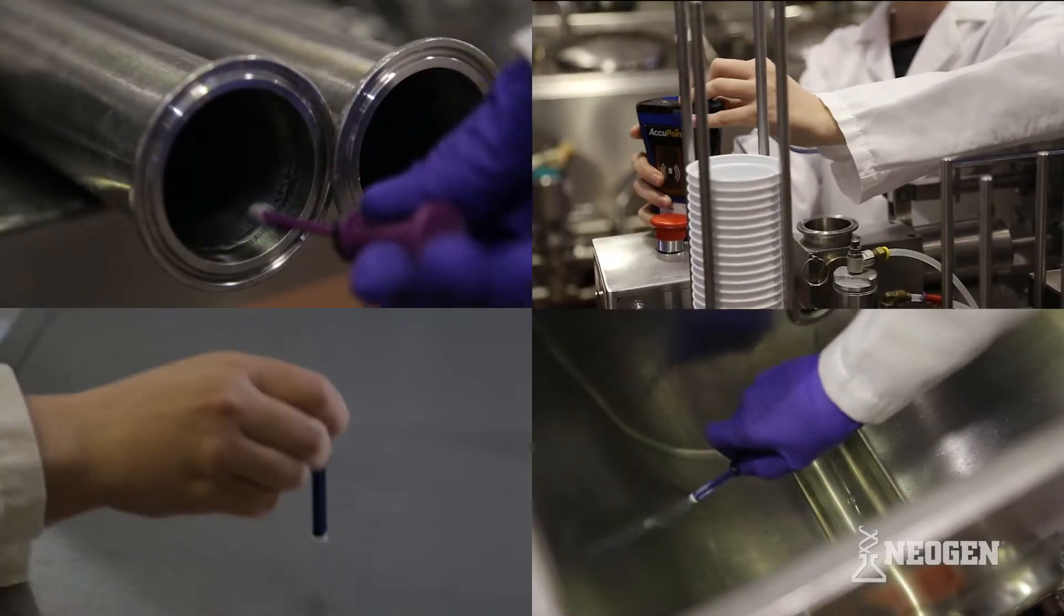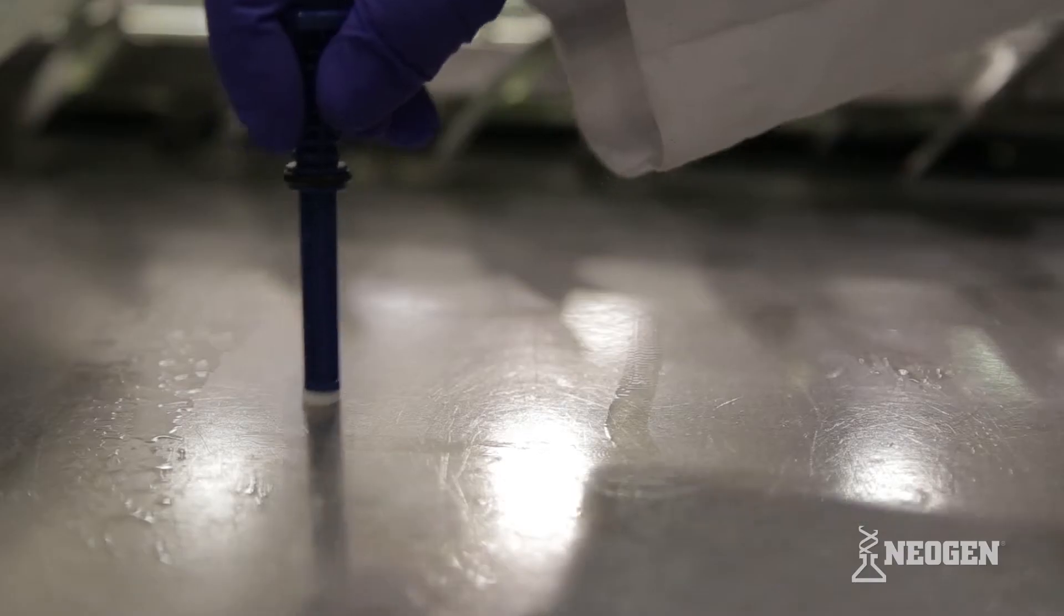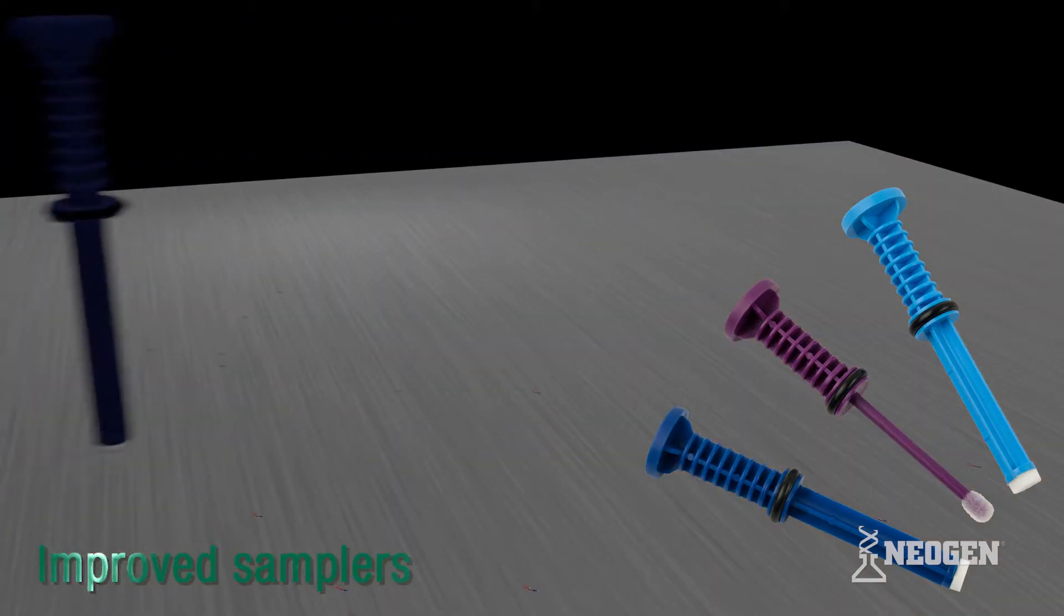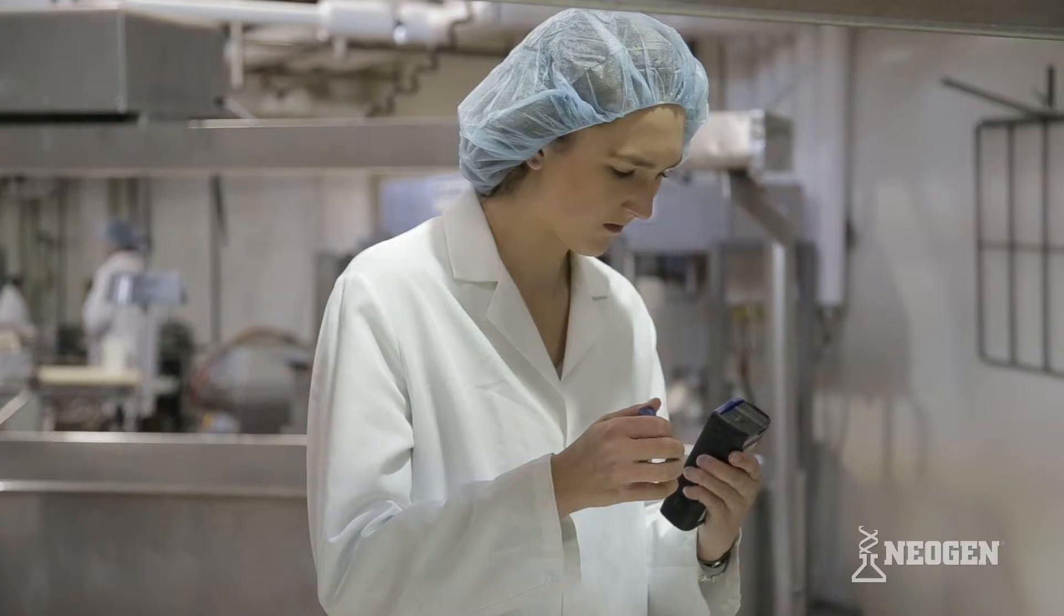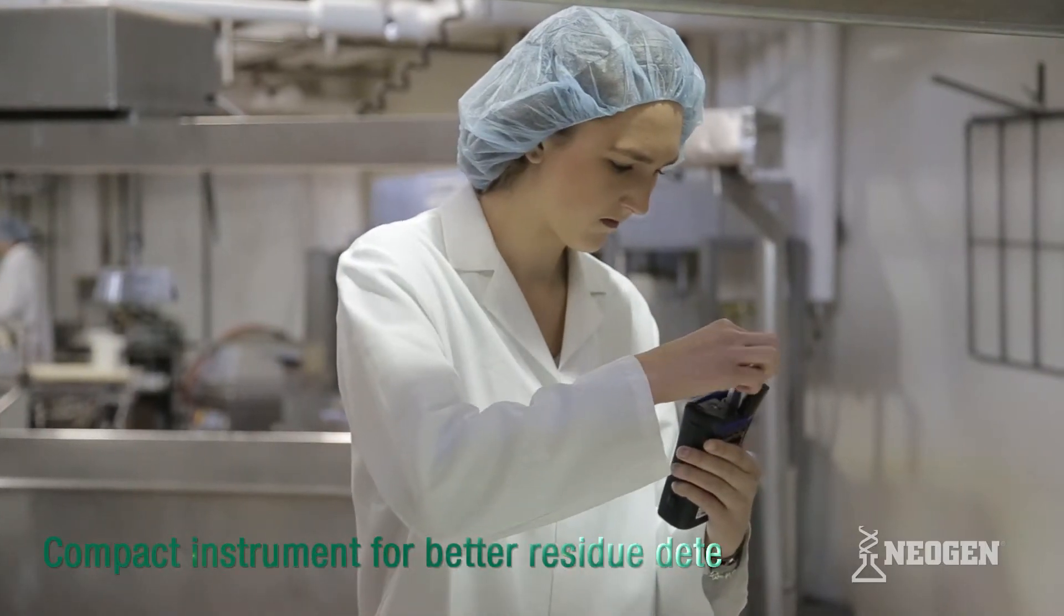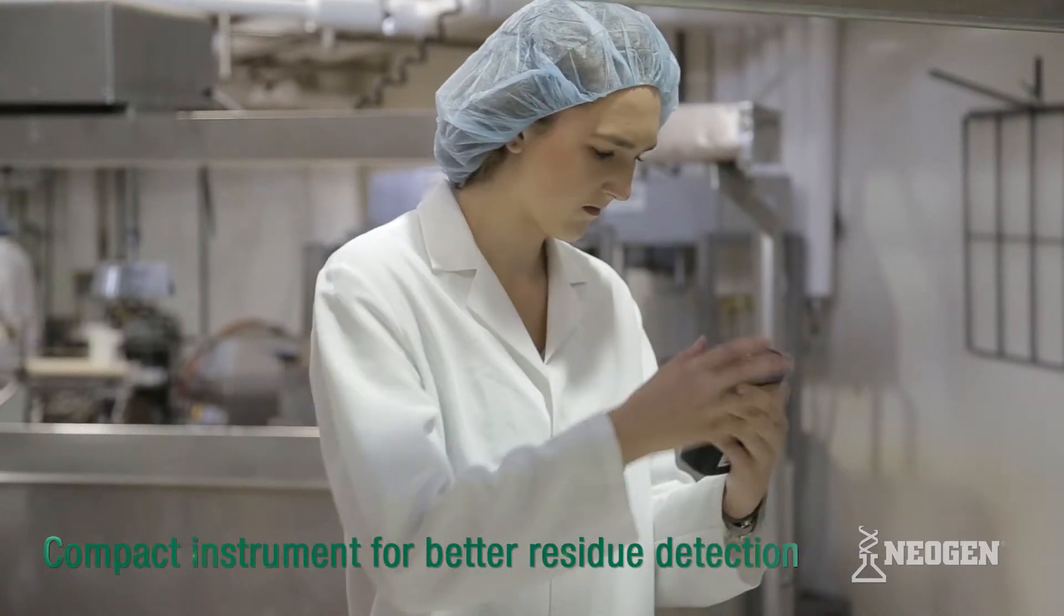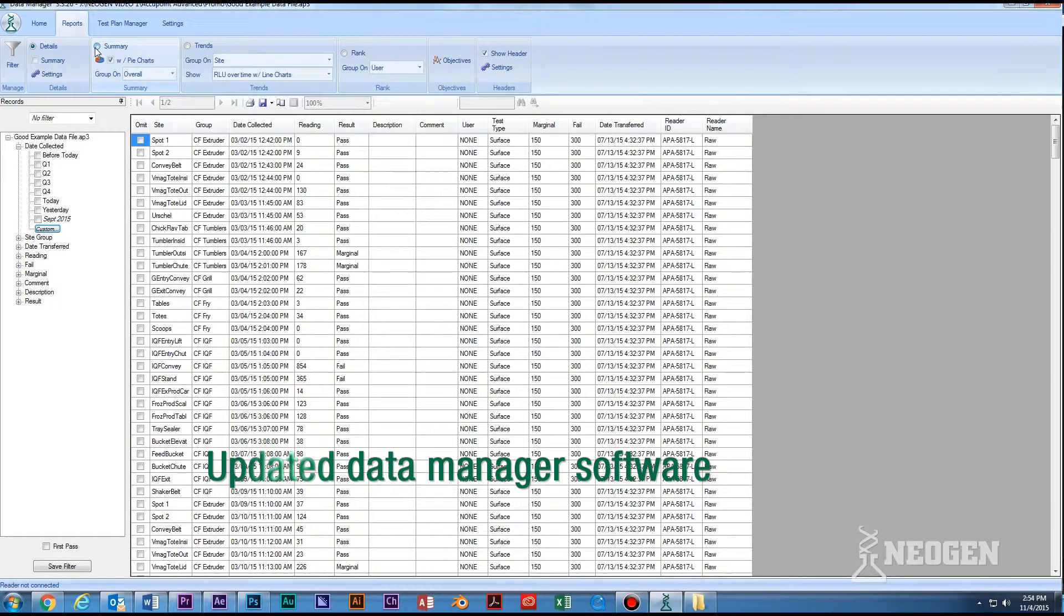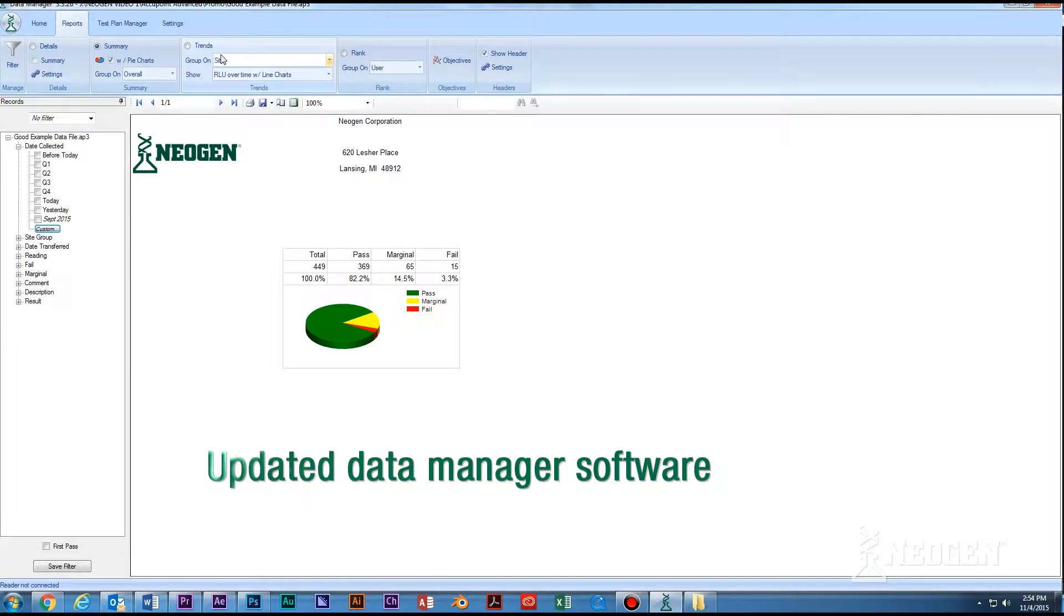The Accupoint Advanced System features third-party validated best-in-class samplers to more consistently collect ATP left behind after cleaning, a compact instrument to detect any residues collected by the samplers, and updated data manager software to better organize and analyze the system's test results.